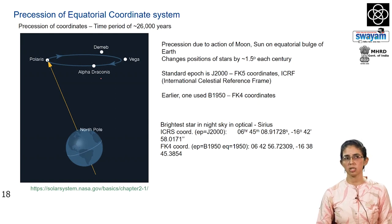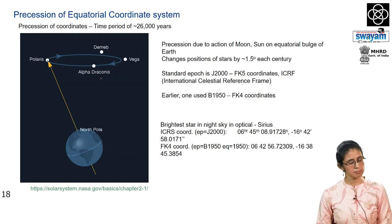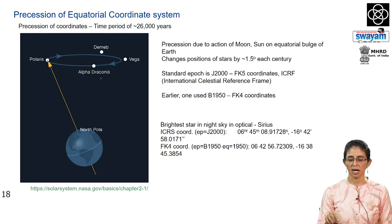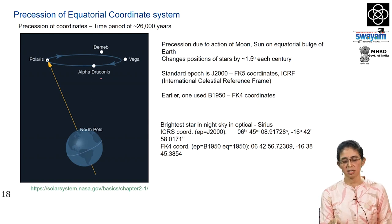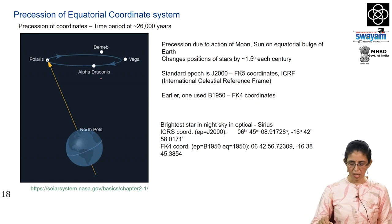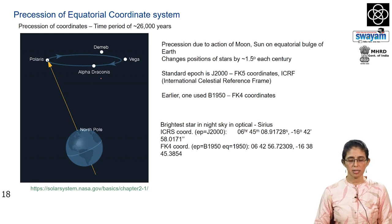Currently the rotation axis points towards Polaris, so Polaris is close to the north celestial pole. As time goes by, Polaris will move away, and probably after 13,000 years another star called Vega will be very close to the north celestial pole. Because of this precession effect, star coordinates are always associated with a given year — for example, the J2000 and 1950 coordinates of Sirius, the brightest star in the night sky, are listed. The right ascension alpha is given in hours, minutes, and seconds, and the declination is given in degrees, arc minutes, and arc seconds.